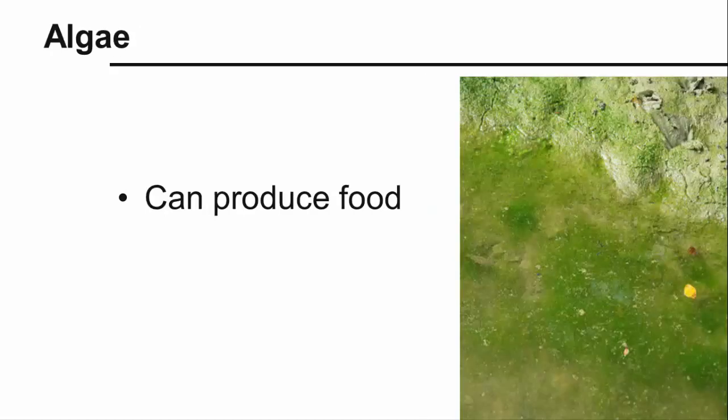Algae, unlike fungi, are capable of producing their own carbohydrates for food through photosynthesis. They can survive in fresh water or salt water individually, but when they are part of a symbiotic relationship with a fungus, they can survive in almost any environment.